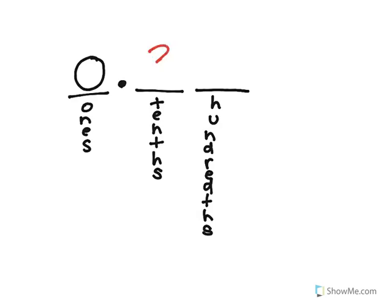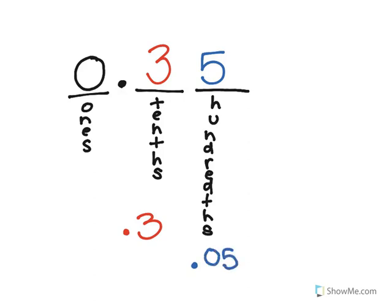So if I gave you 3 in the tenths place and 5 in the hundredths place, this right here is worth 3 tenths, so I would write it as 0.3. This is worth five hundredths. I need to put the 0 and then the 5, so it has to be in that hundredths place. So the expanded form of this would be 3 tenths plus 5 hundredths, to give me 35 hundredths. And I need my decimal point.